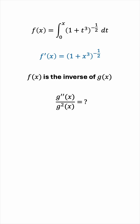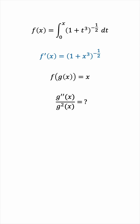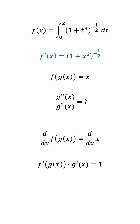We know that f is the inverse of g. This means that f of g of x must be x. Let's differentiate this. We get f prime of g of x times g prime by the chain rule, and this must be equal to 1, the derivative of x with respect to itself.